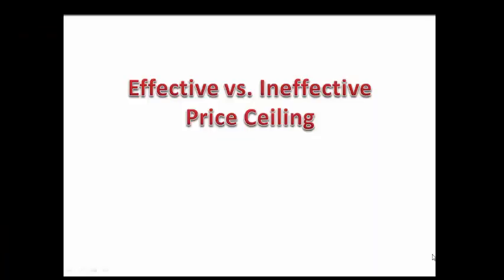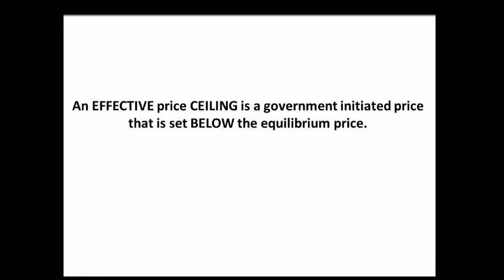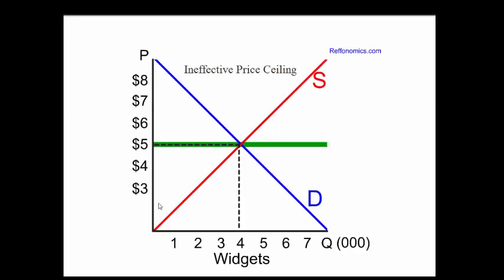Effective versus ineffective price ceiling. An effective price ceiling is a government-initiated price that is set below the equilibrium price. The price ceiling is set below the equilibrium price. The reason it's called a price ceiling is it is the highest price that can be charged by law, and so a price ceiling again is set below the equilibrium price.